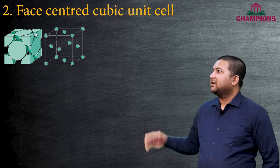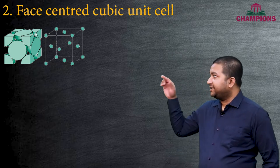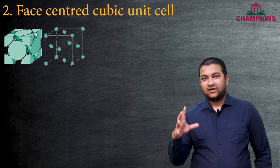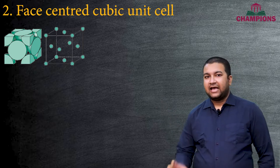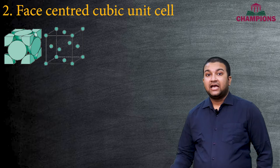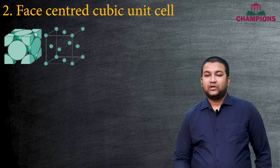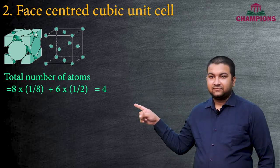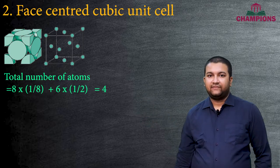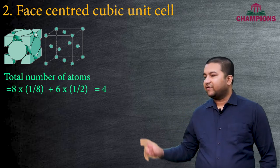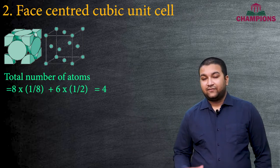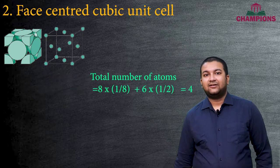For the face-centered cubic unit cell, in addition to the corner atoms, there are atoms at the center of each face. There are six faces on the cube, and each face has one-half of an atom. So the total effective number of atoms is: 8 × (1/8) + 6 × (1/2) = 1 + 3 = 4 atoms effectively in this unit cell.